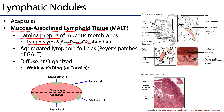MALT tissues are important in different ways. In the GALT there are specialized Peyer's patches — aggregates of lymphatic tissue in the distal ileum that are important for potential immune responses as elements are absorbed across the gut wall. MALT tissue may either be diffuse — at a low level throughout the mucosa — or very well organized. Organized mucosa-associated lymphoid tissues are known as O-MALTs.